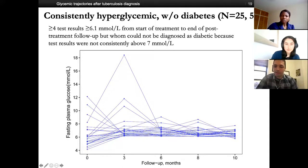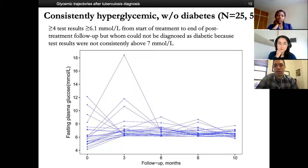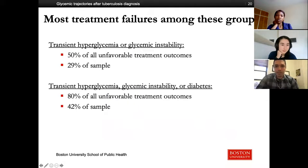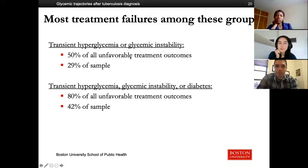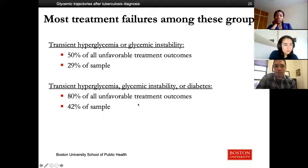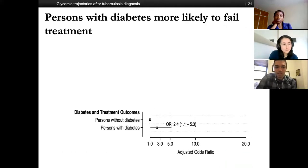We had these five trajectories: normal glycemia, previously diagnosed diabetes, transient hyperglycemia, glycemic instability, and consistently hyperglycemic without clear diabetes classification. Next we assessed whether these groups had abnormal clinical outcomes for TB treatment. The transient hyperglycemia group and the glycemic instability group together represented 50% of all unfavorable treatment outcomes. Adding in the diabetes group, these three groups represented 80% of all unfavorable treatment outcomes.